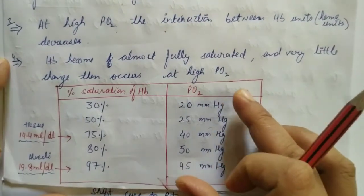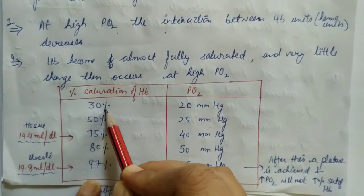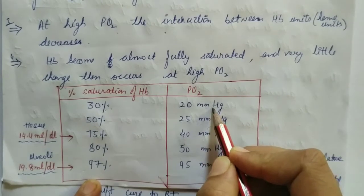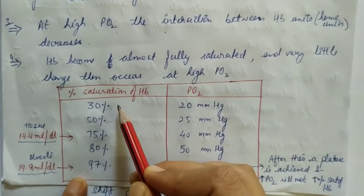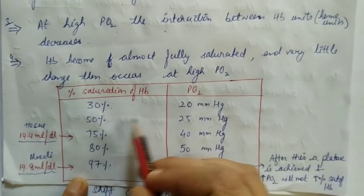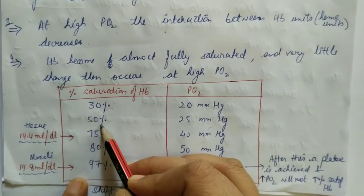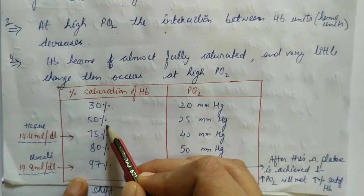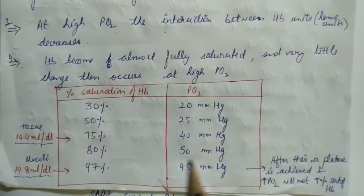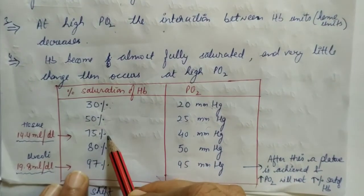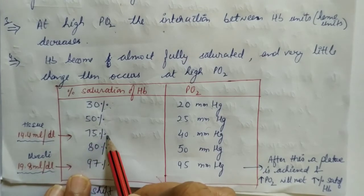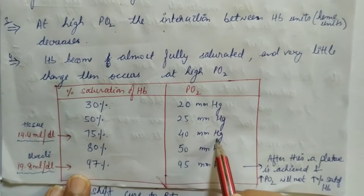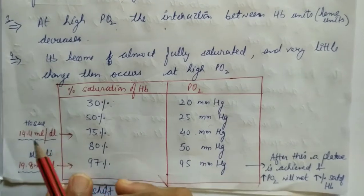I have made a small graph and table here — you should look at it. When there is 30% saturation of hemoglobin, that happens at 20 mmHg partial pressure of oxygen. At 25 mmHg, your hemoglobin will be 50% saturated. Similarly at 40 mmHg partial pressure, your hemoglobin still has 75% saturation. This condition is in the tissue — you remember we studied this — in the tissue where 40 mmHg partial pressure is present.